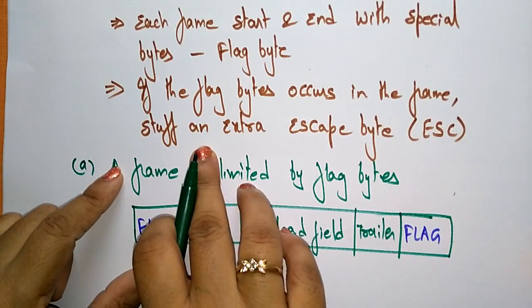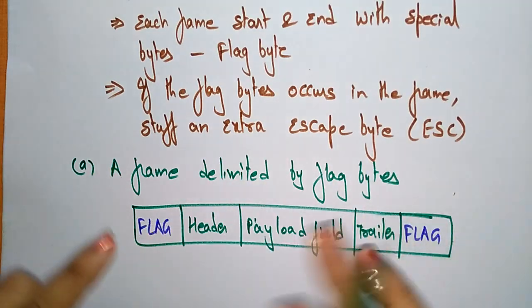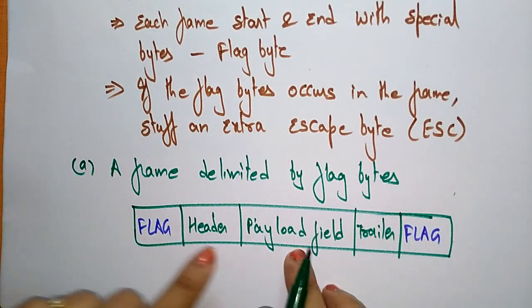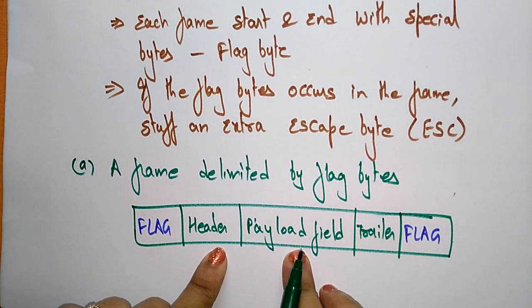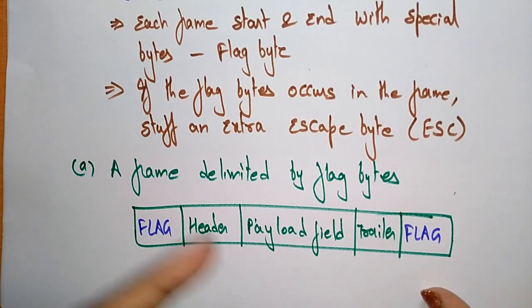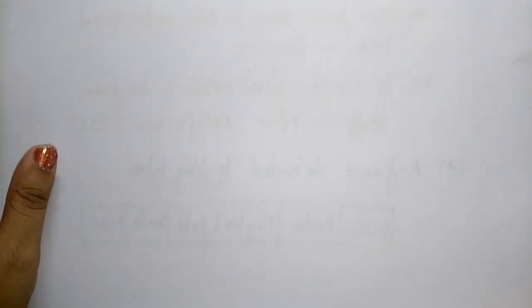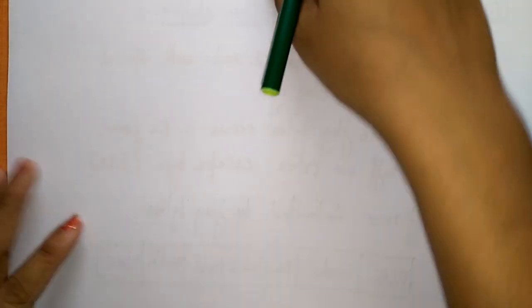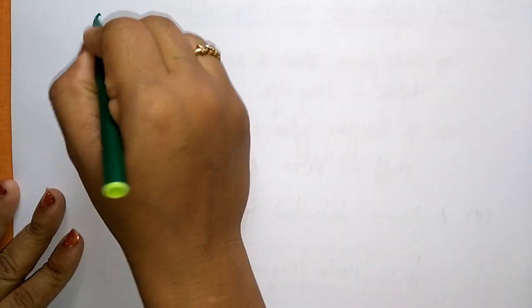If the flag byte occurs inside the frame — if a flag byte is already there in the frame — then you have to stuff an extra escape byte. Now let us see that example. I'm taking four examples of byte sequences before and after stuffing.